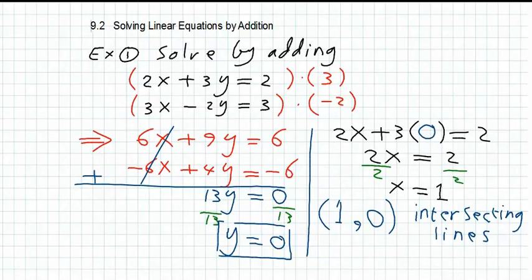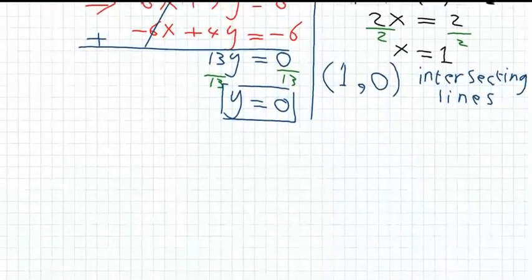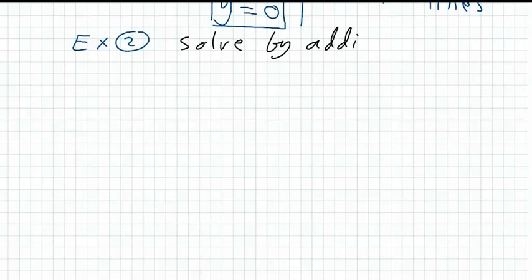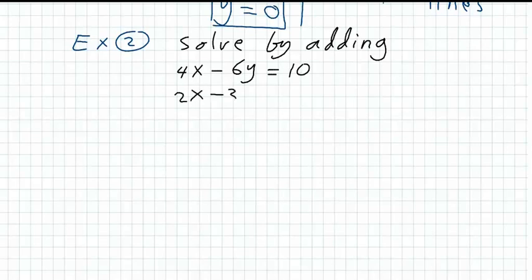This is the solution for these two equations. Now let us see another condition where lines are not intersecting. They may be parallel lines or they may be coincide lines. Example two: solve by adding. You will be given two equations — for example, 4x minus 6y equals 10, and 2x minus 3y equals 5.